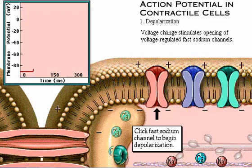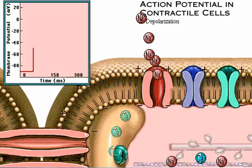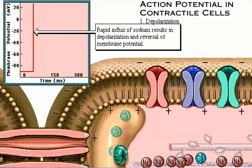This voltage change stimulates the opening of voltage-regulated fast sodium channels. Rapid influx of sodium results in depolarization and reversal of the membrane potential from negative inside the cell to positive. Recall that for the autorhythmic cell, it is the rapid influx of calcium and not sodium that causes depolarization.